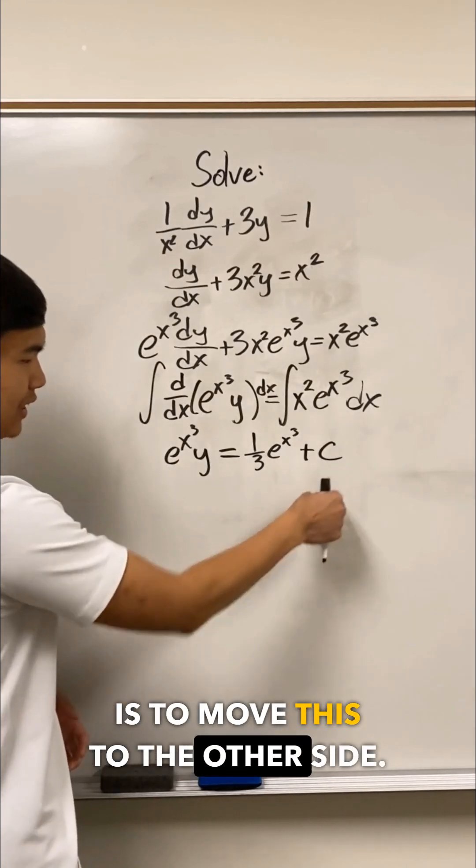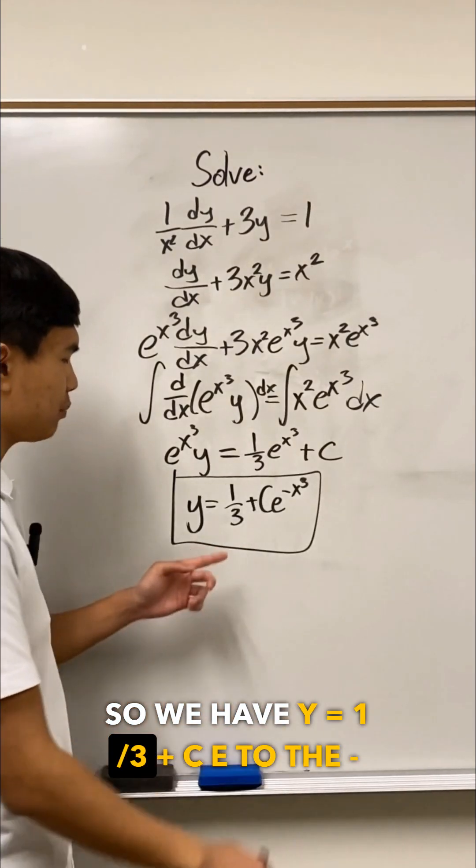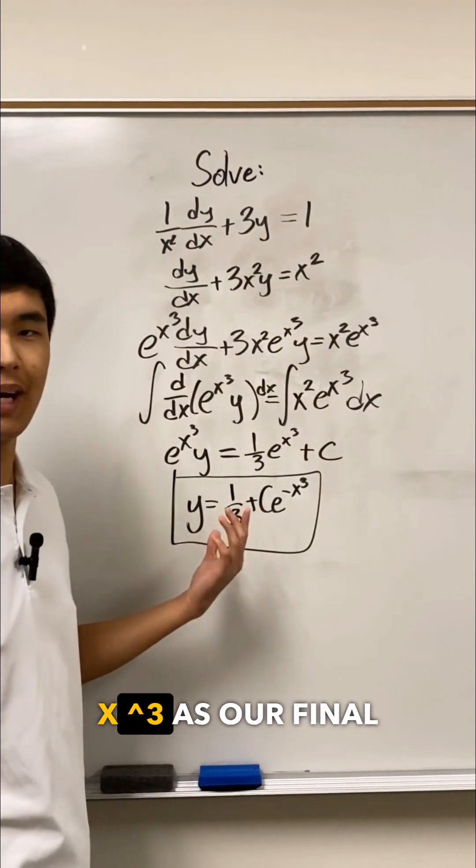All that's left is to move this to the other side. So we have y equals 1 third plus c e to the minus x cubed as our final solution.